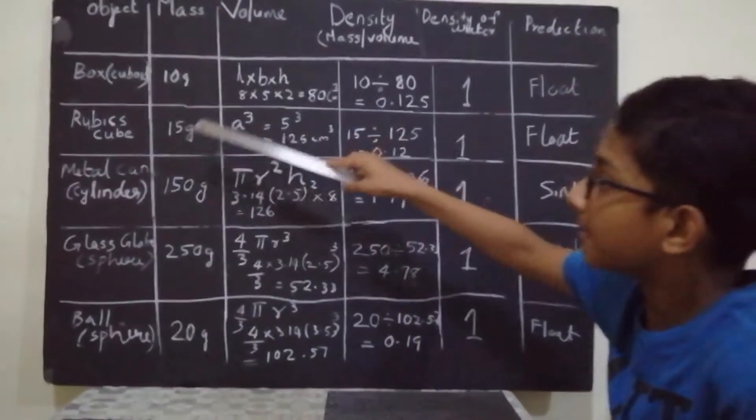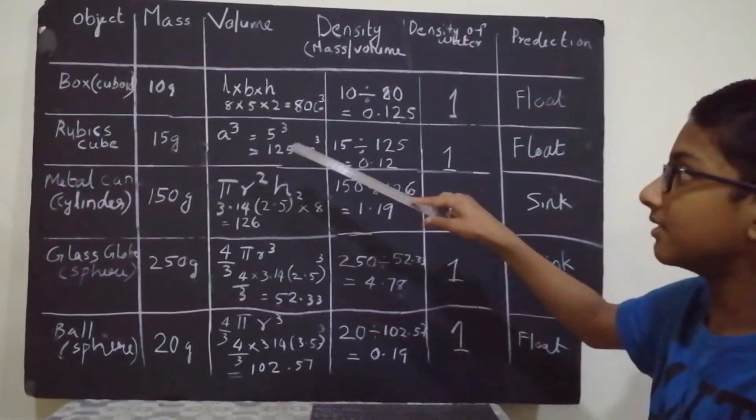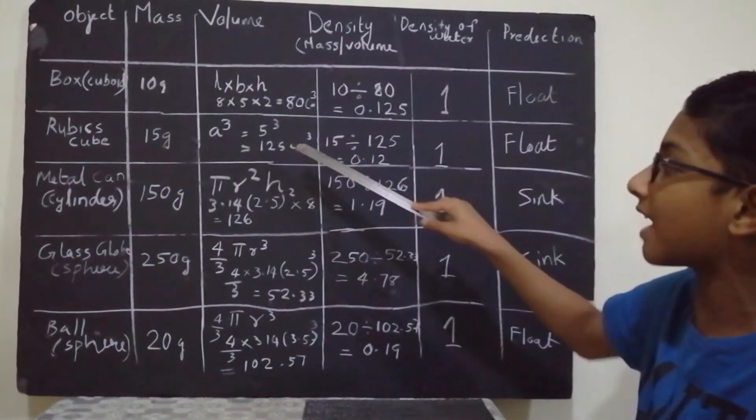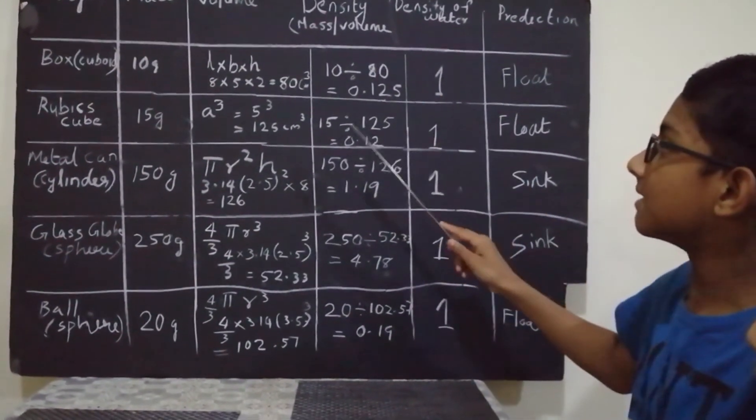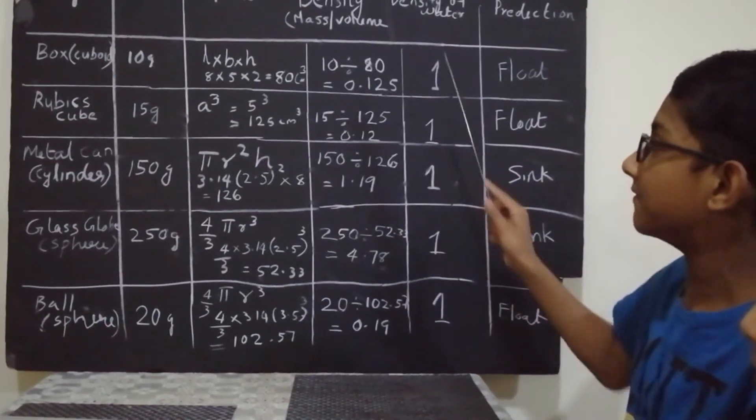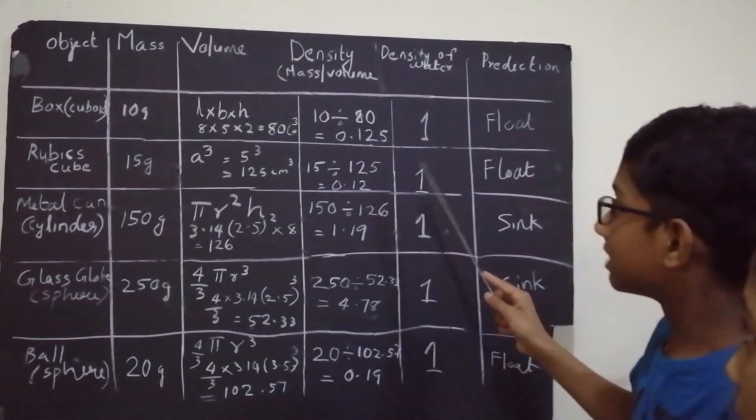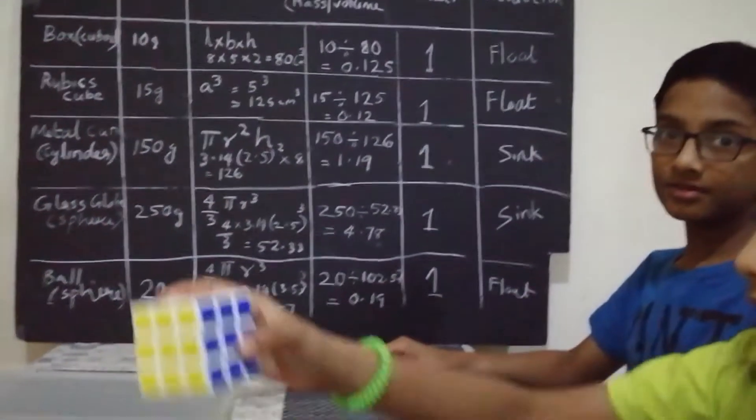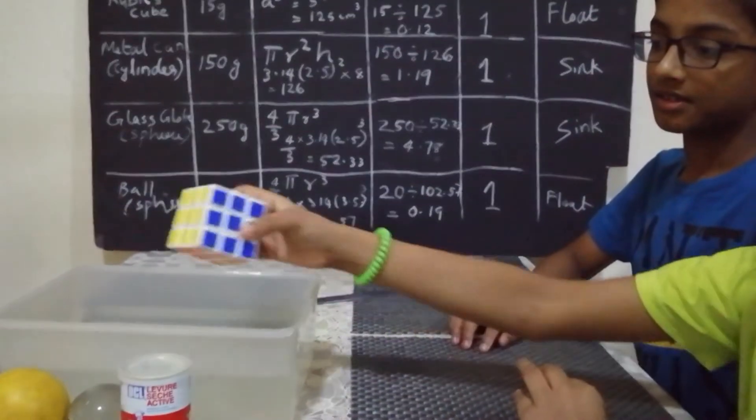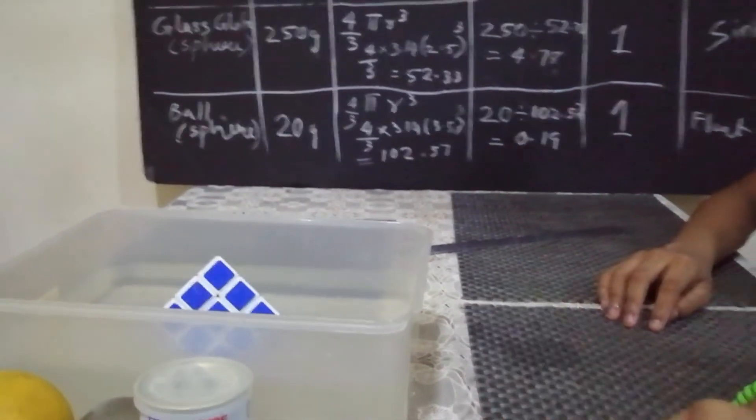A Rubik's cube. The mass is 15 grams. Volume is A cube. This equals 5 cube, equals 125 centimeter cube. The density will be 0.12 by dividing. And as the density of water is 1, it will float because it is less than 1. Let us check if it is correct. Yes, it is correct. It is floating.